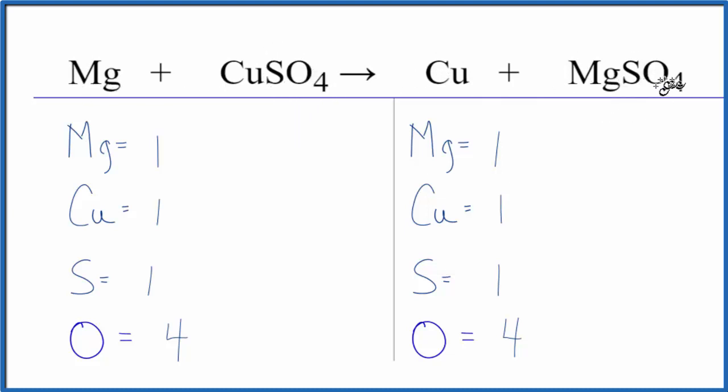That's a single displacement reaction. We should also note if there's nothing written after an element, that means there's one of that element. For oxygen here we have the four, that means we have four of those.